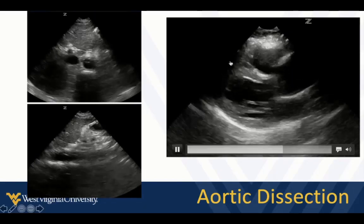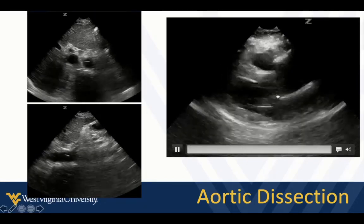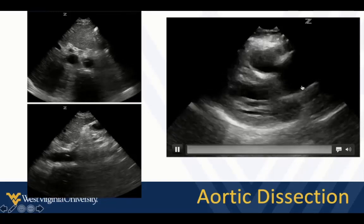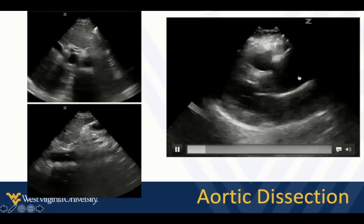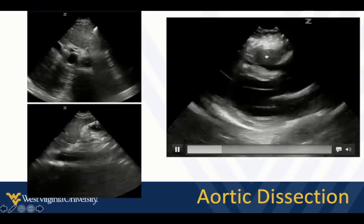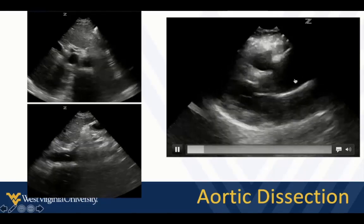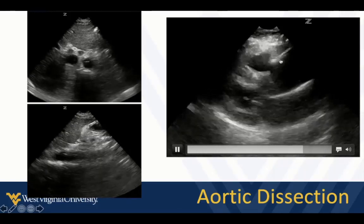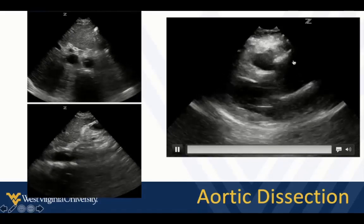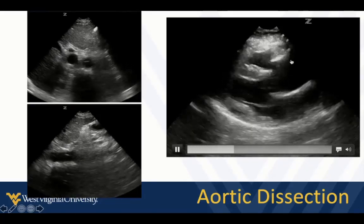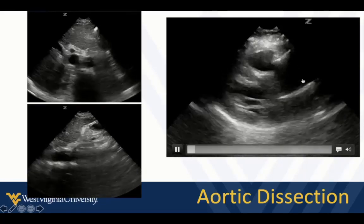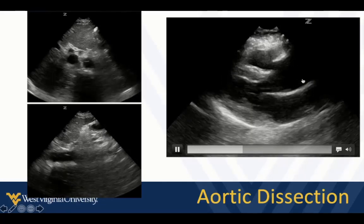Here are a couple of examples. What I want you to notice is this aortic root is dilated. You can measure it if you want to, or you can just recognize that the right ventricle, the aortic root, and the left atrium should be about equal thirds. But in this scenario, one third is off, so the aortic root is dilated. If you measure it and it's more than four centimeters, then that's too big.